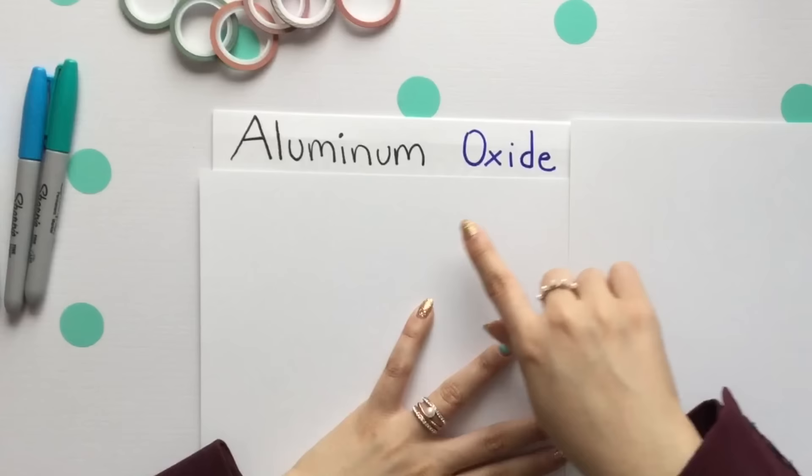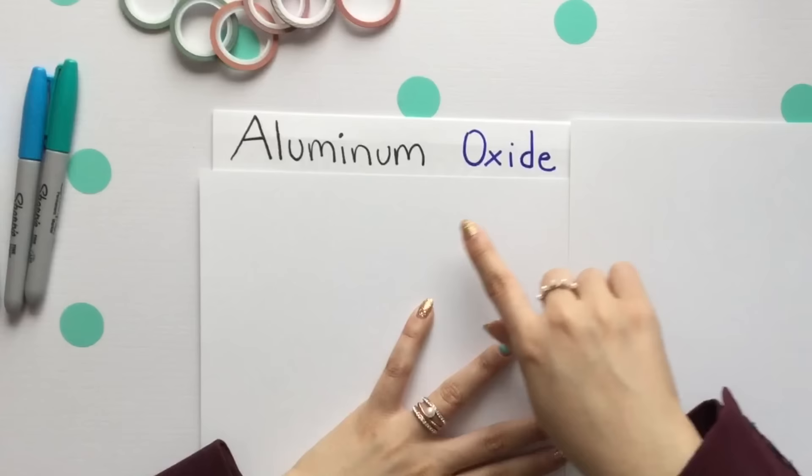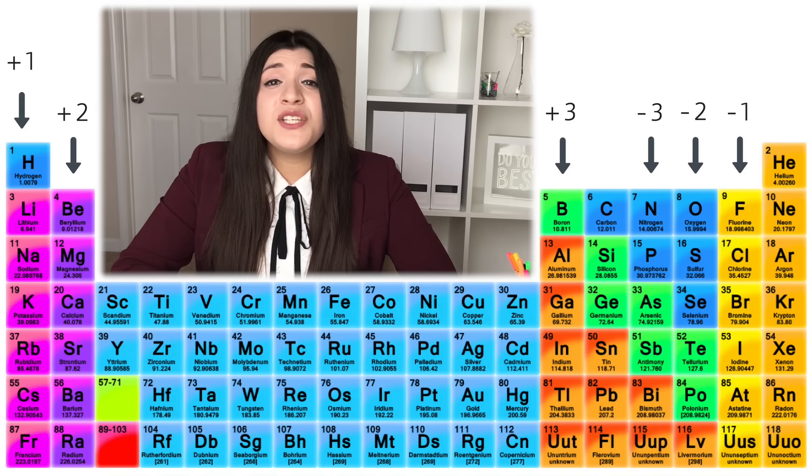We'll start with the different types of naming for ionic compounds. The first one: ionic compounds without a transition metal. Aluminum oxide shows you the name of the metal, aluminum, and oxygen, our non-metal, ending in ide.